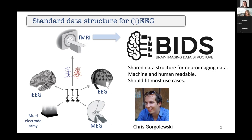The other thing important about BIDS is that it's designed to fit most use cases — really about 80% of use cases should fit within BIDS. And even if you have some more exotic data, the BIDS principles often still apply, and you can still propose an extension to make sure it fits your data.